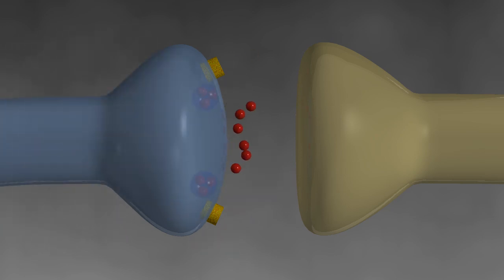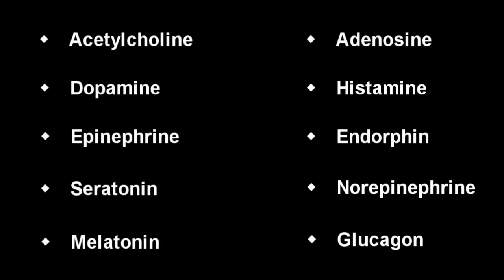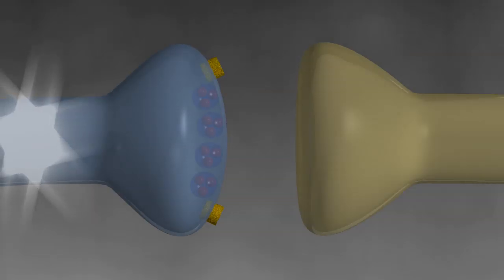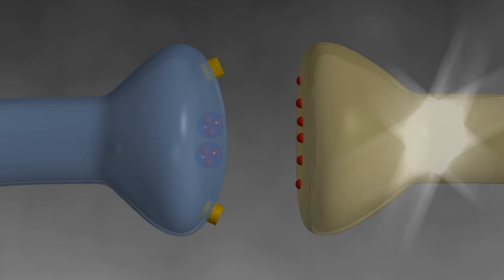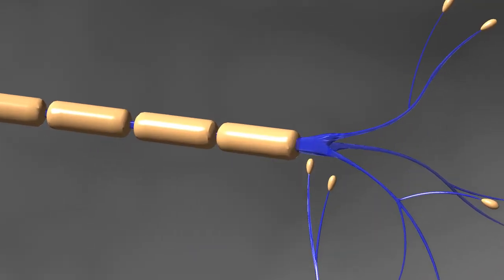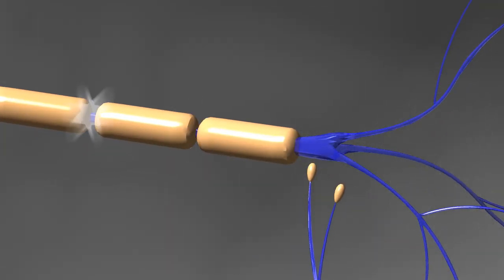There are over 100 known chemical neurotransmitters in the brain and body. Some of the more common ones are listed below. Some of these neurotransmitters are excitatory, causing the next cell to fire in their presence, while others are inhibitory and prevent the cell from firing in their presence.